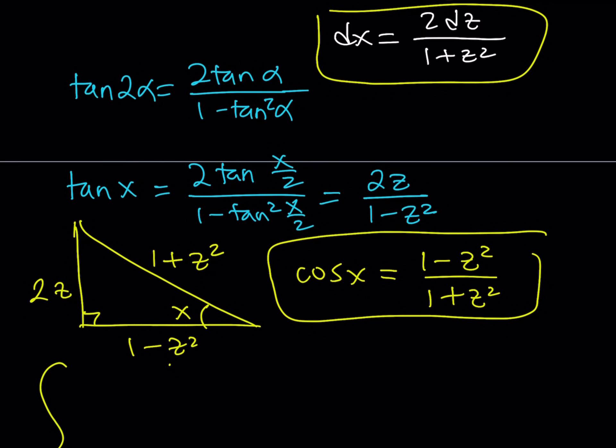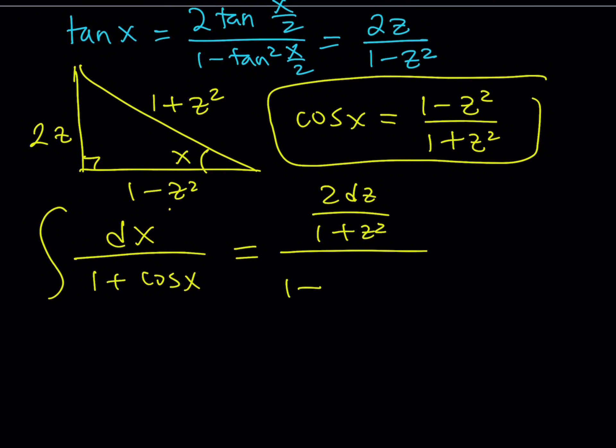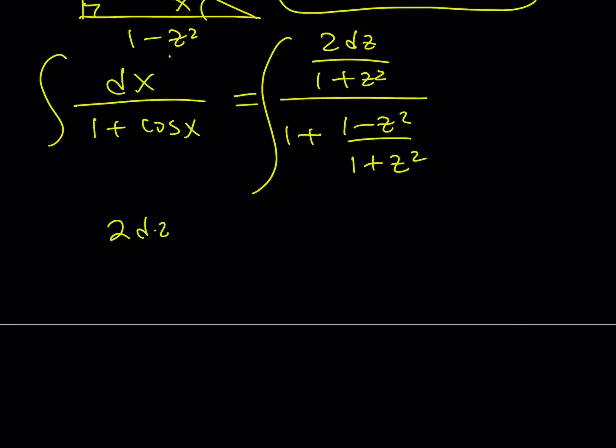Let's put these together. I'm trying to solve dx over 1 plus cosine x. I'm going to replace dx with 2dz over 1 plus z squared, and I'm going to replace 1 plus cosine x with 1 plus the expression 1 minus z squared over 1 plus z squared. When you make a common denominator, multiply 1 by 1 plus z squared, then add 1 minus z squared, divided by 1 plus z squared. I know this may look very complicated. Why are we doing this? Because at the end, it'll be very simple.